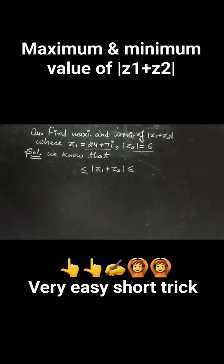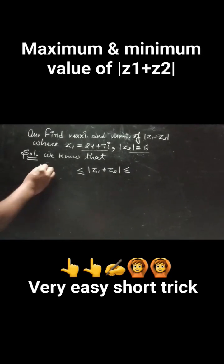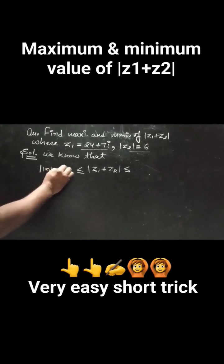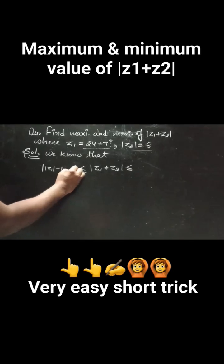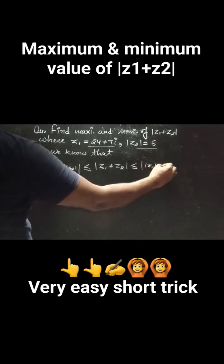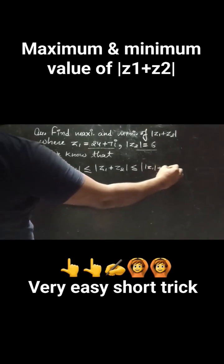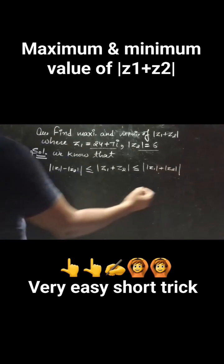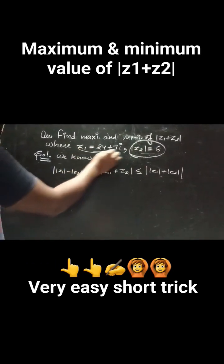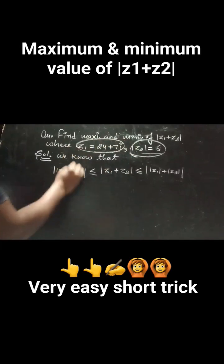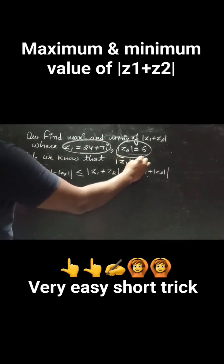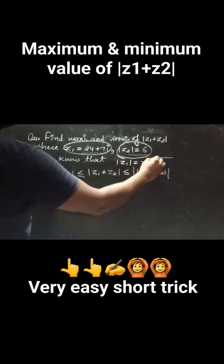The modulus of z₁ plus z₂ lies between the absolute value of the difference of moduli — that is, |z₁| minus |z₂| taken as positive — and the sum of the moduli of z₁ and z₂. So: ||z₁| - |z₂|| ≤ |z₁ + z₂| ≤ |z₁| + |z₂|.